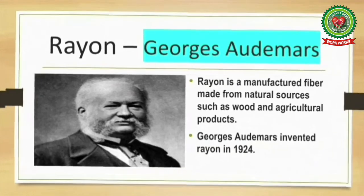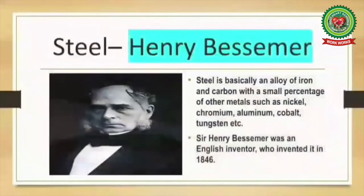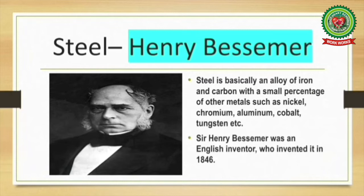The next invention is steel. Steel is basically an alloy of iron and carbon with a small percentage of other metals such as nickel, chromium, aluminium, cobalt, and tungsten. Sir Henry Bessemer was an English inventor who invented it in 1846.